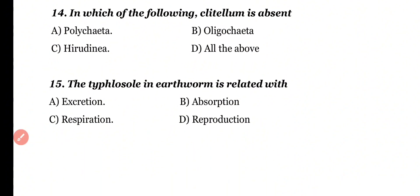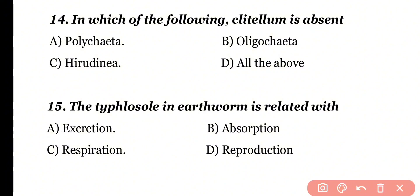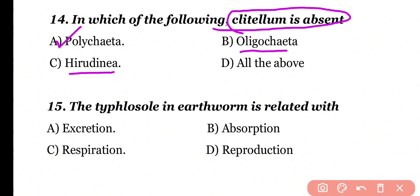Question number 14. In which of the following is clitelium absent? Polychaeta, Oligochaeta, Hirudinea, or all of the above. Correct answer is option A. Clitelium is present in Hirudinea and Oligochaeta, while in Polychaeta clitelium is absent. Correct answer is A.